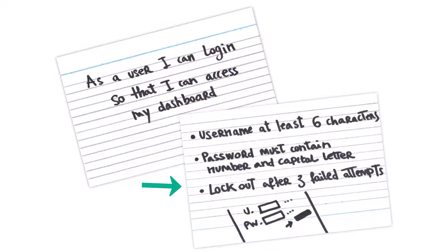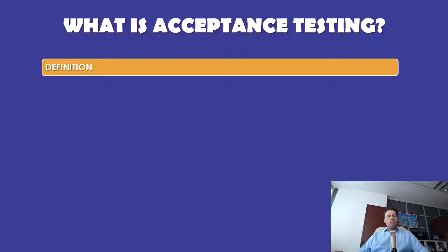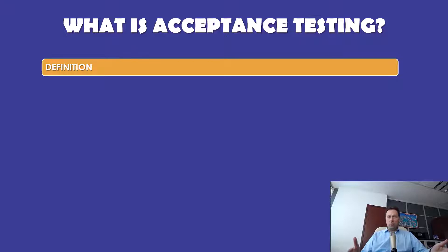The kind of test written on the back of the card is an acceptance test. An acceptance test is a check for whether a requirement is met. Acceptance testing is used in almost all engineering disciplines, and software engineering is no different.